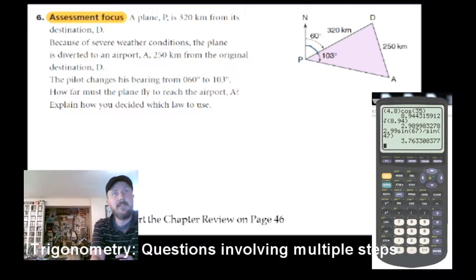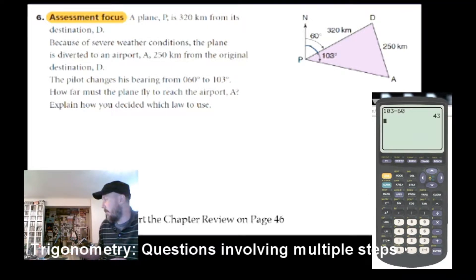So I've still got my stuff from the last one up. 103 minus 60, we've got 43. So inside here, this angle right here is 43. Now it does help me definitely having that, but I'm still stuck a little bit.